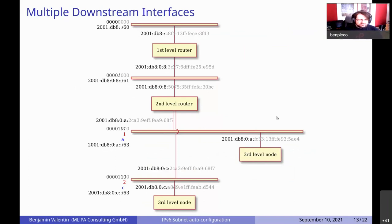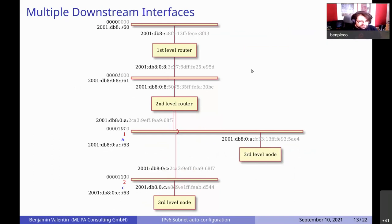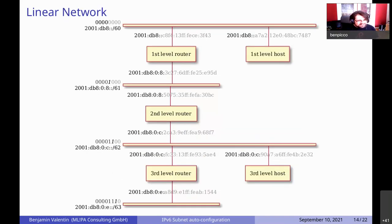Here's how this works in a linear network with three levels of routers. The first router gets the /60 prefix on db8 and has one downstream network, so it consumes a single bit set to 1, shifted to the 60th position, creating an 8/61 subnet. The next router does the same and creates a c/62 network, then a e/63 network. With multiple downstream interfaces it works the same way — we're just counting up, and we could even create a third network without consuming more bits.